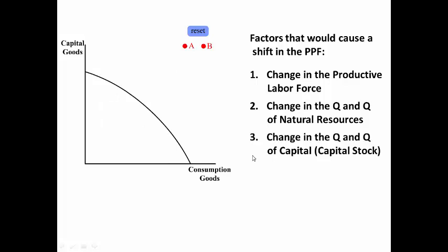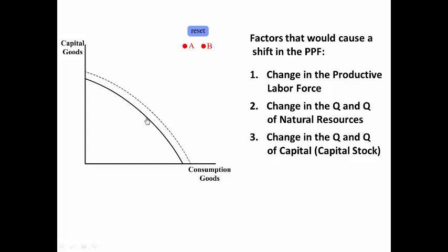If there's a change in the quantity and quality of capital or capital stock — capital stock being equipment, factory machinery — then if there's an increase in that, it's going to shift the production capabilities outward. And if there's a change in a negative direction of the capital stock, then that would shift the production possibilities frontier inward.